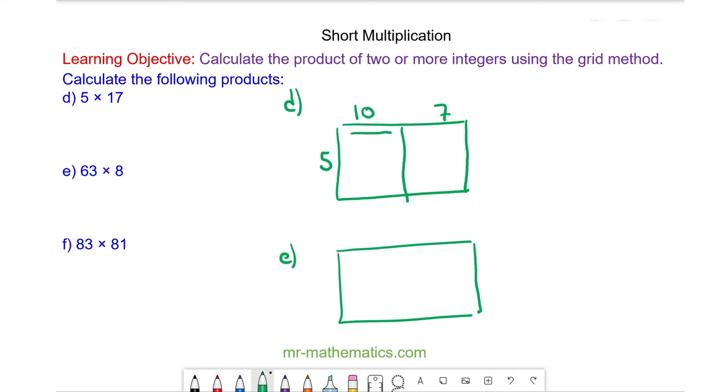The area of this section is going to be 5 times 10 which is 50 and this section which is 5 times 7 which is 35. So the total area is the sum of the 2 which is 85.